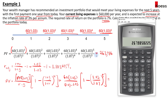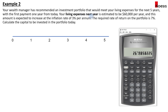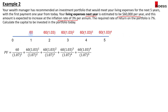One thing to watch out for: if you are given the current living expenses, input that directly as PMT. But in another scenario, if you're told your living expenses for next year are $60,000 (not this year, but next year), with 3% inflation from year two onwards, then the cash flow is $60,000 in year 1, growing at 3% from year 2 onward.